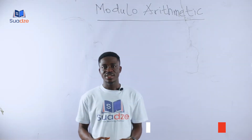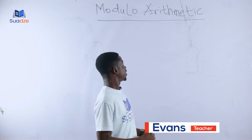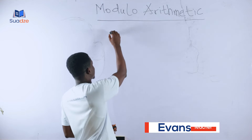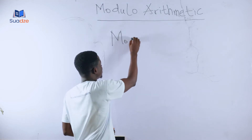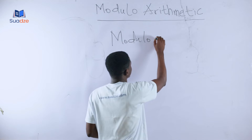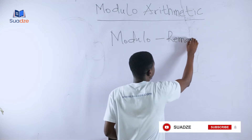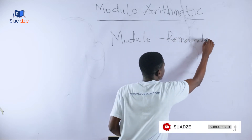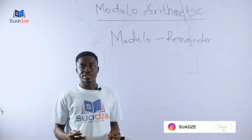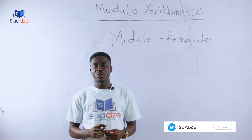We are going to look at modulo arithmetic. Modulo is a Latin word which means remainder — it means what is left after a certain number is shared among a certain group of people.